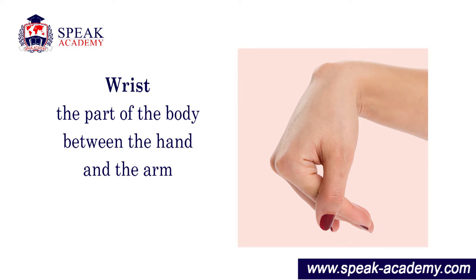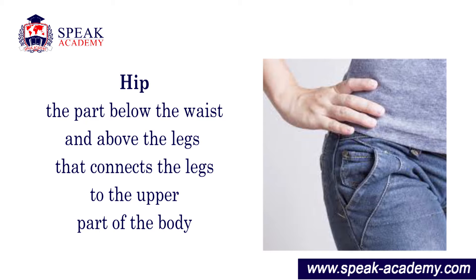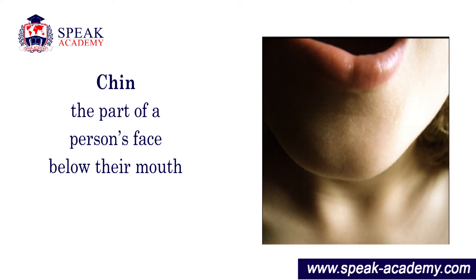Wrist: the part of the body between the hand and the arm. Hip: the part below the waist and above the legs that connects the legs to the upper part of the body. Chin: the part of a person's face below their mouth.